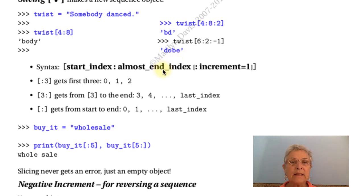The syntax goes like this. You give it a start index, an almost end index after a colon, and you may, if you wish, add another colon and the increment. You may skip the first integer, and just do colon three. That will start at the beginning. You can skip the second integer. This will start at three, and it will go all the way to the end.